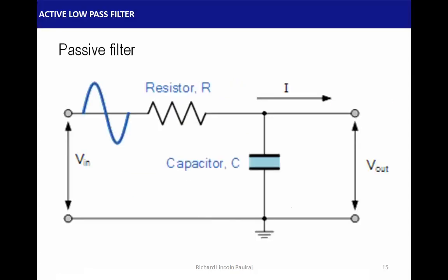Here is an example of a passive filter: the input signal is given, there is a resistor and a capacitor, and this forms a low pass filter. If you invert the resistor and capacitor — putting the capacitor first then the resistor — it becomes a high pass filter. The circuit has just the resistor and capacitor with no signal source or additional voltage.